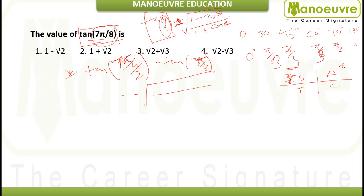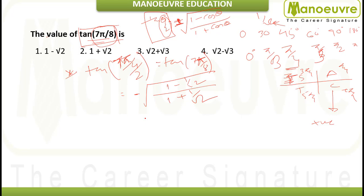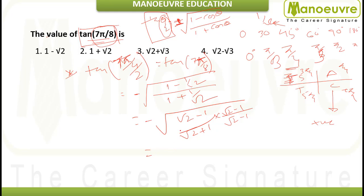Substituting: tan(7π/8) = −√((1 − 1/√2)/(1 + 1/√2)). Rationalizing gives −√((√2 − 1)/(√2 + 1)). Multiplying numerator and denominator by (√2 − 1): the numerator becomes (√2 − 1)² and the denominator becomes (√2)² − 1² = 2 − 1 = 1. So we get −√((√2 − 1)²) = −(√2 − 1) = 1 − √2, which is option 1.